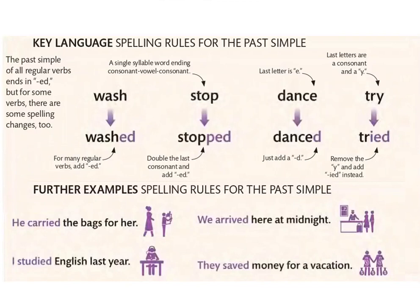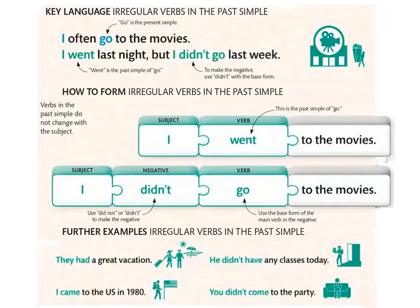Now we move to irregular verbs. Irregular verbs يختلفوا برشا على regular verbs — القاعدة ما تمشيش معهم. Regular verbs عندهم قاعدة: نزيدولهم -ED كل ما يتحولوا للpast. ولكن irregular verbs يتحولوا بطريقة مختلفة — كل واحدة منهم تتحول بطريقتها.